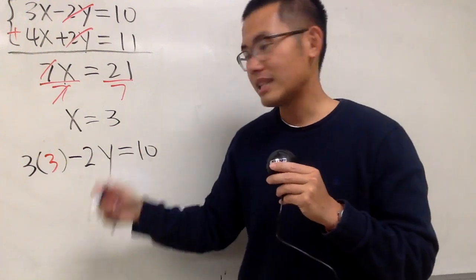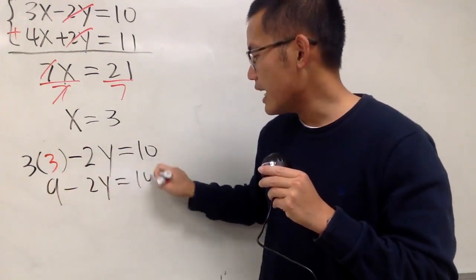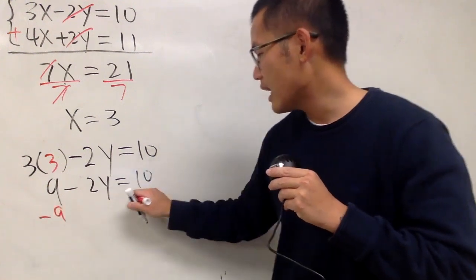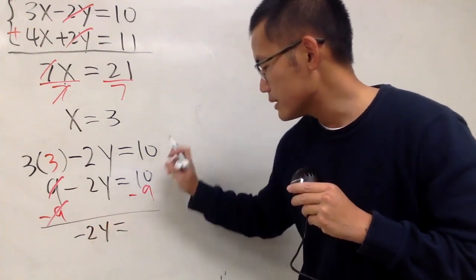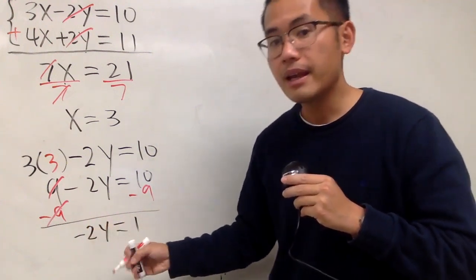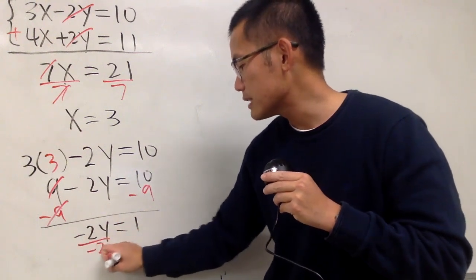And again, right here, just work that out. This is 9 minus 2y equals 10, minus 9 on both sides, and we have negative 2y equals 10 minus 9 is 1. And remember, this is negative 2 times y, so we will have to divide both sides by negative 2.